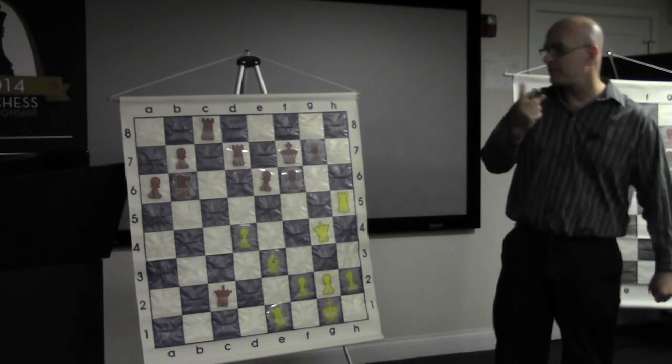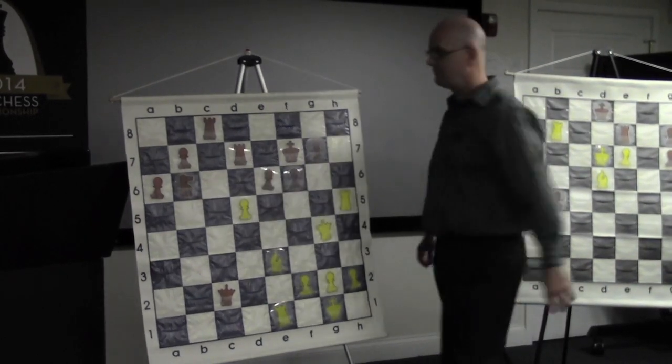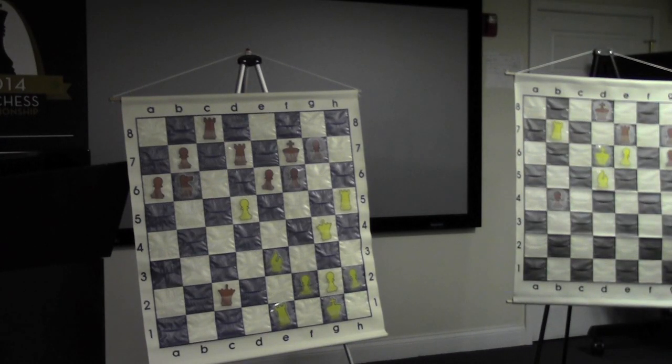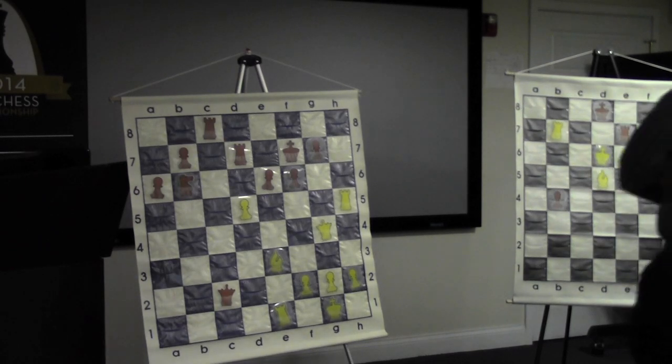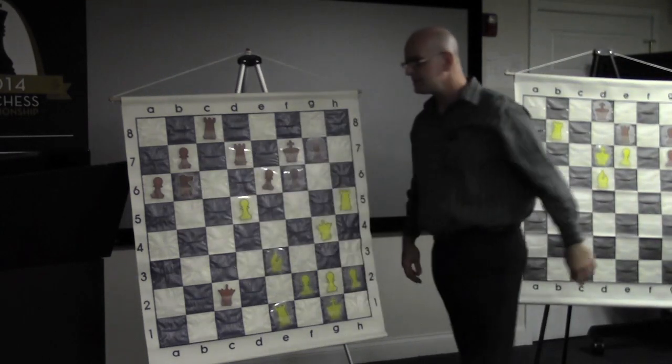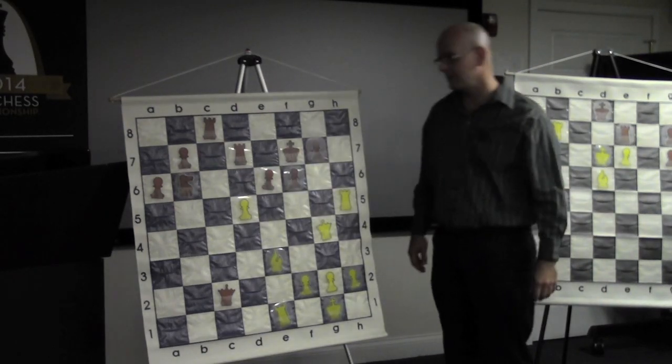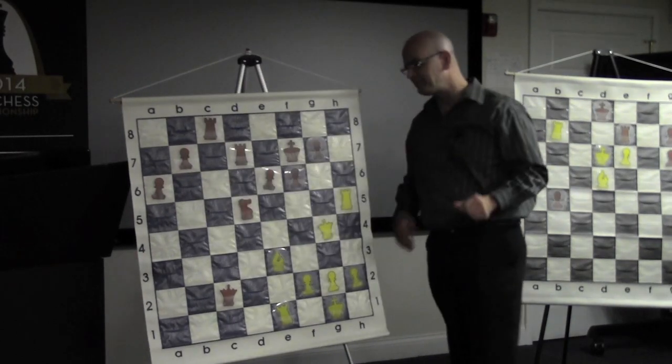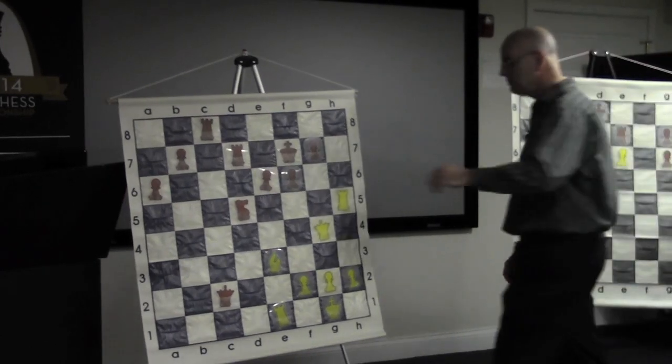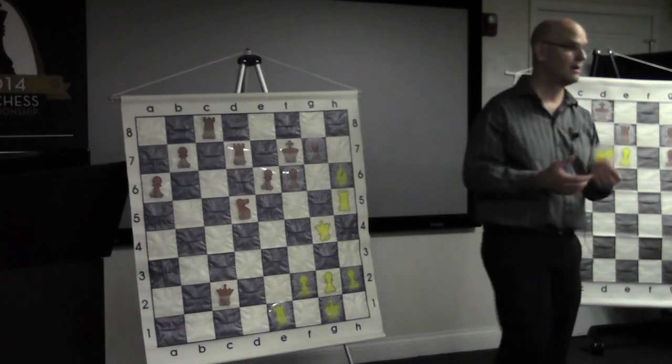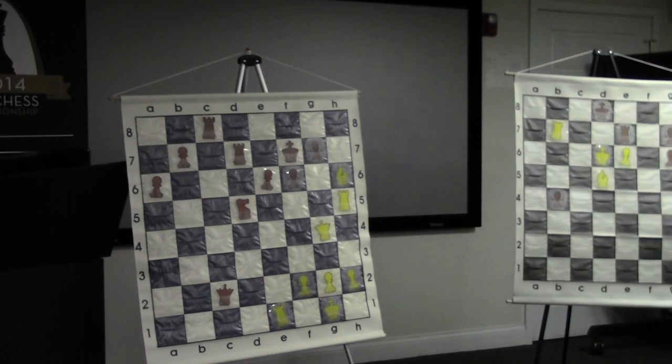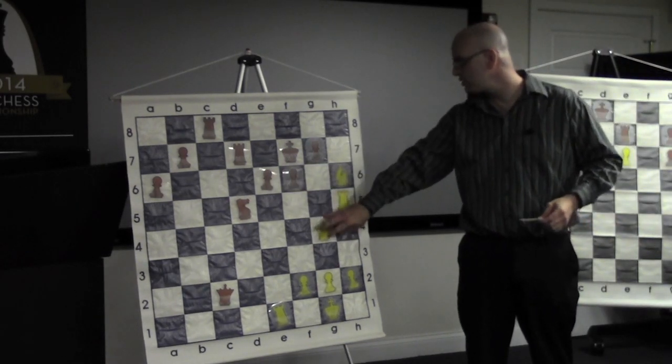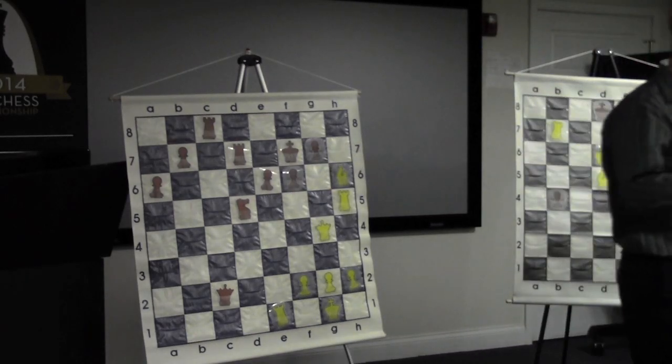So Jay had really been outplaying me on the black side of c3 Sicilian, but his last move was careless. And so now I got my big chance here. White to move. The first move that I played here is d5, uncovering an attack on black's knight on b6. Bishop takes knight is threatened. Also this pawn is threatened. Black certainly wants to play knight takes pawn, which Whitehead did play.